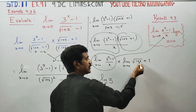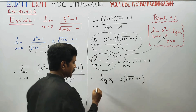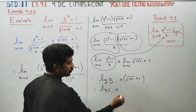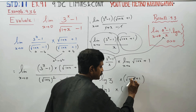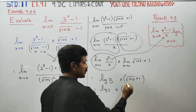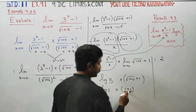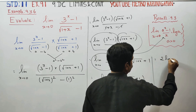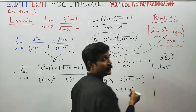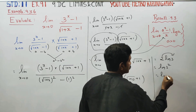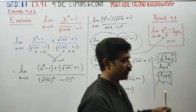Substituting x = 0 in the second limit: √(1+0) + 1 = 1 + 1 = 2. Therefore, the answer is log 3 times 2, which equals 2 log 3. Applying the power rule, 2 log 3 = log 3² = log 9. So the final answer is log 9.